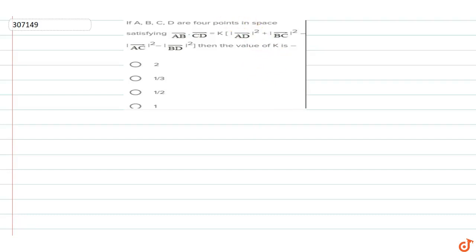In this question, if A, B, C, D are four points in space satisfying AB vector dot CD vector equals k times mode of AD vector whole square plus mode of BC vector whole square minus mode of AC vector whole square minus BD vector whole square, then find the value of k.